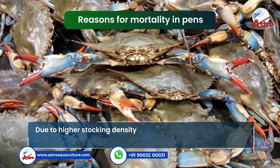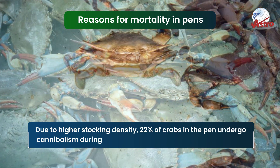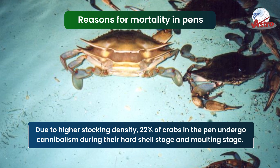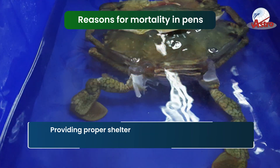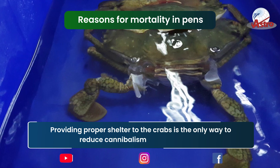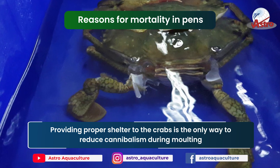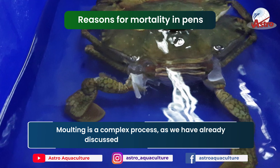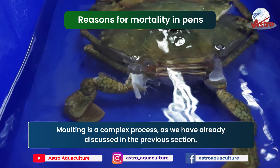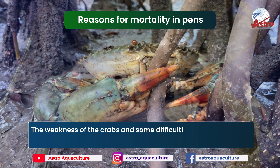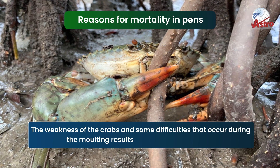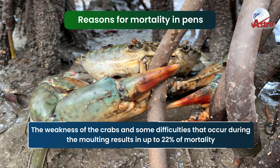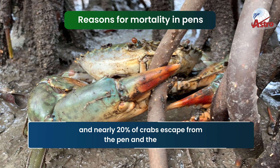Due to higher stocking density, 22 percent of crabs in the pen undergo cannibalism during their hard shell and molting stages. Providing proper shelter is the only way to reduce cannibalism during molting. The weakness of crabs and difficulties during molting result in up to 22 percent mortality.